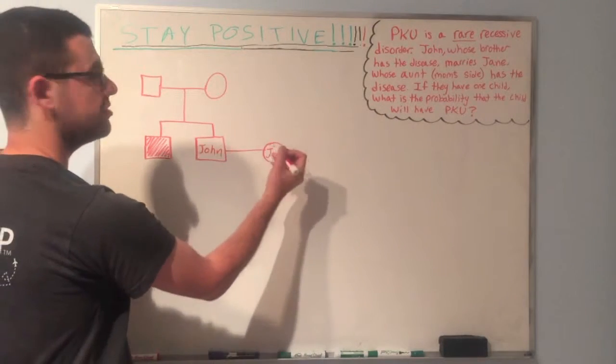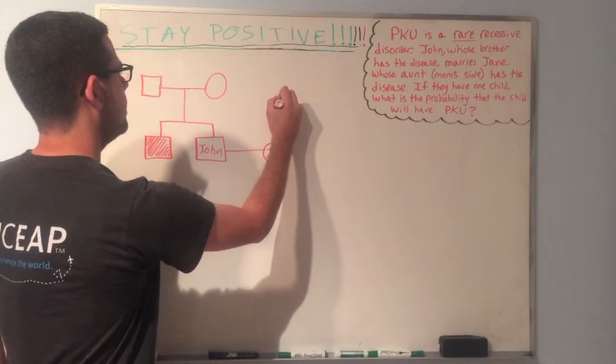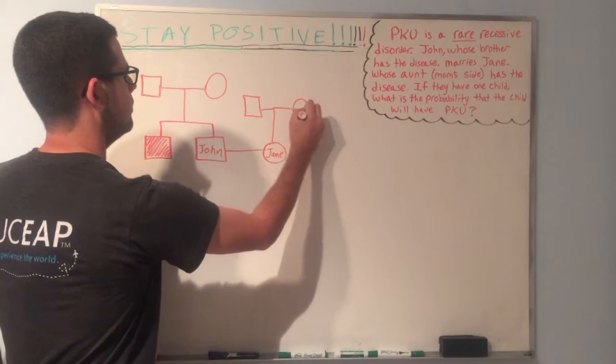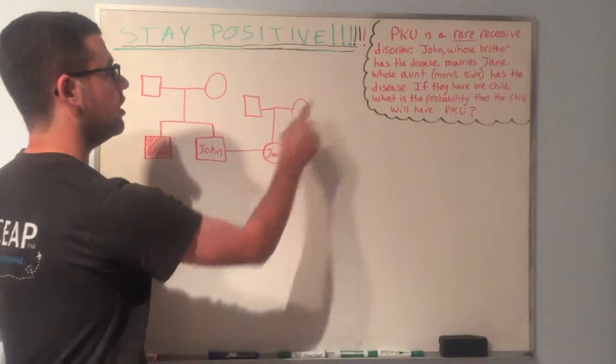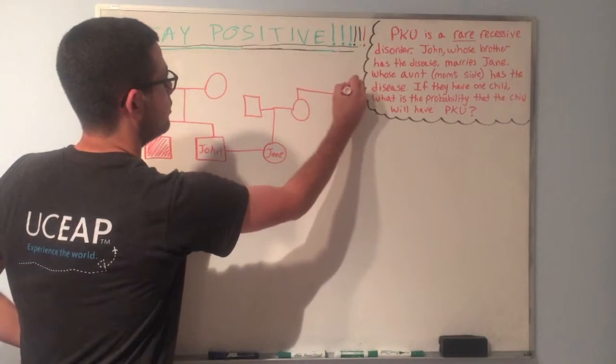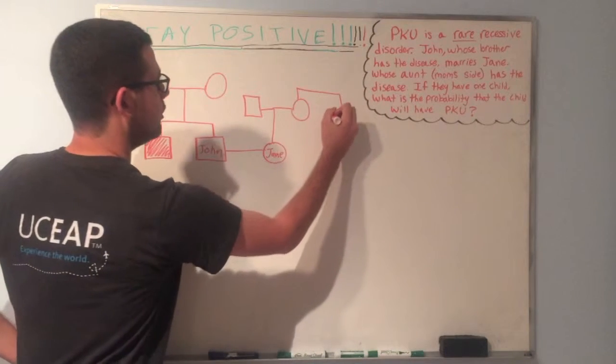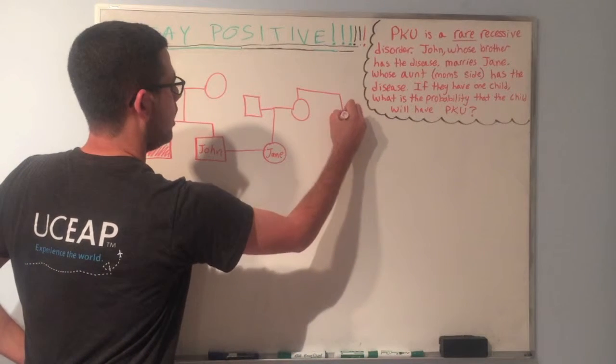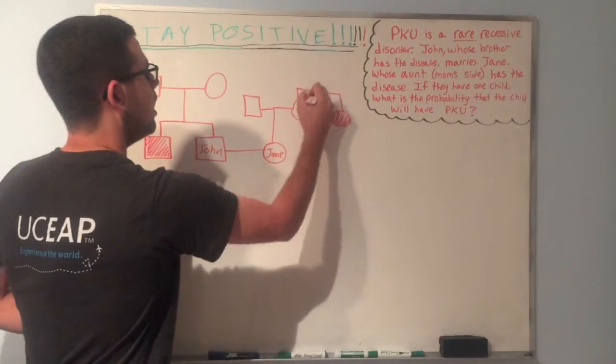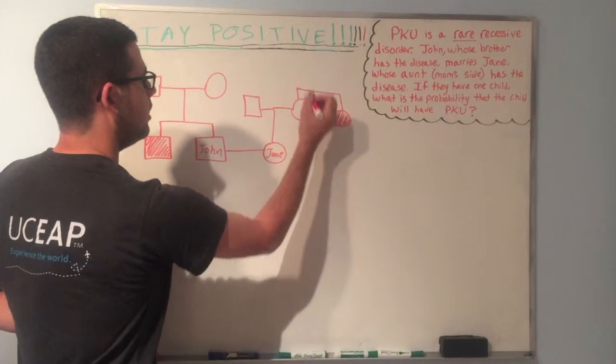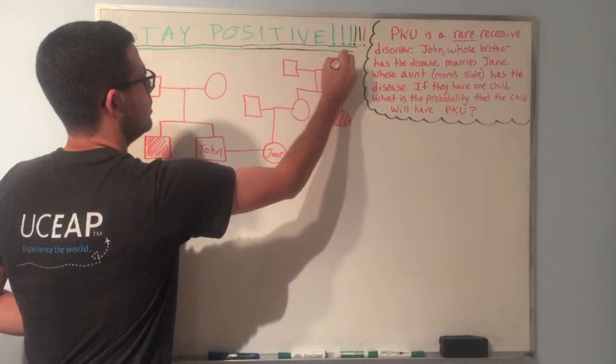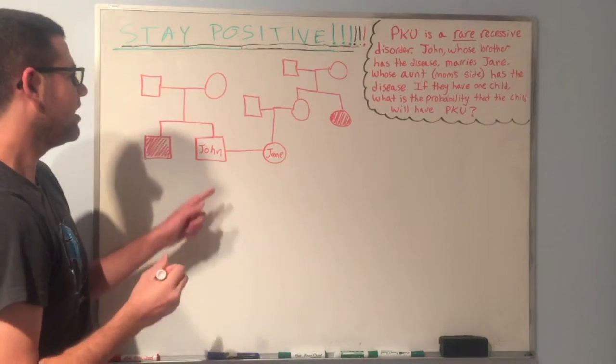And now let's draw Jane's parents. So Jane would have a father and a mother. But now we also know that Jane's aunt on her mom's side is affected. So now let's draw a sister to her mother, i.e. her aunt. And we're going to fill that in because her aunt, Jane's aunt, is affected. And then finally, to top off this pedigree, let's draw Jane's mom and Jane's aunt, their parents. So it'll be one square and one circle. Sorry, it's a little messy.